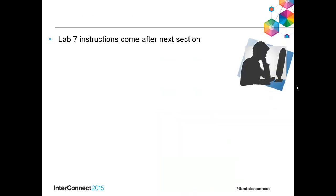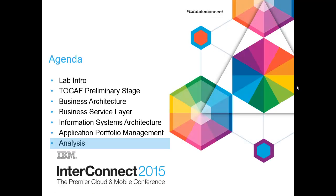And so that helps the argument for what you would want to do or not do with an application. Then comes Lab 7 — bear with us here and hang in for these next set of slides. You'll do Lab 7 after these next set of slides, where you'll be importing some information from an APM tool and then analyzing that information.